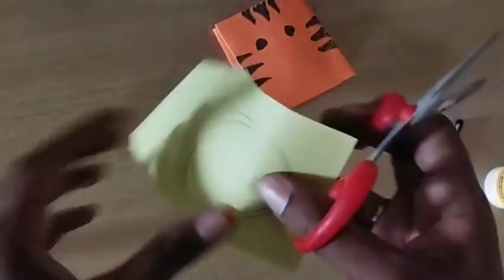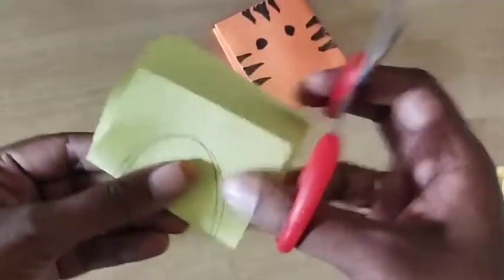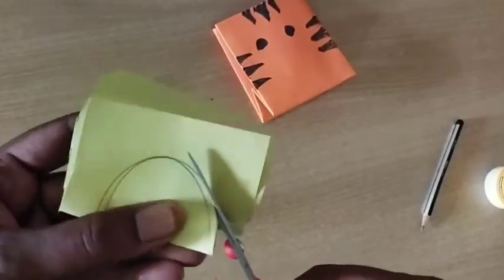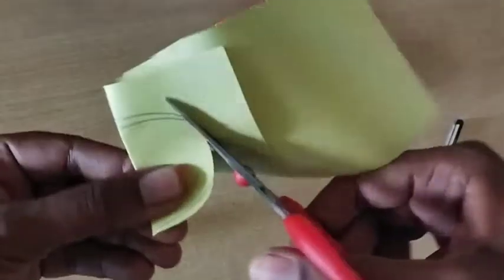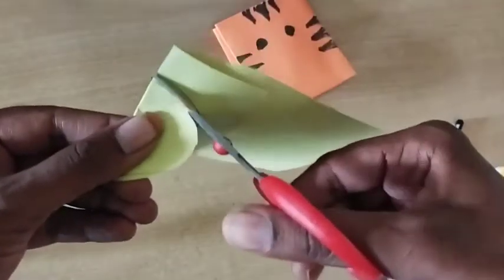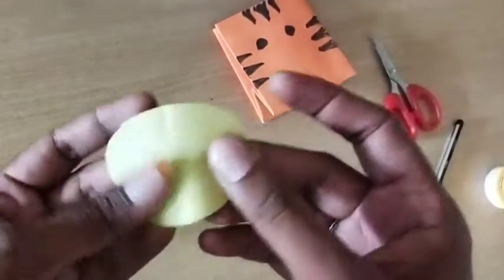We will position this oval shape on the back of the tiger to complete this part.